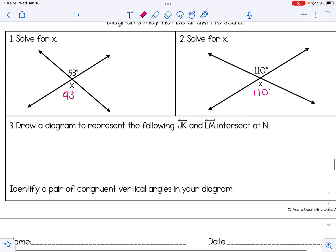Number three wants us to draw the diagram ourselves. It says draw a diagram to represent the following: Line JK and line LM intersect at N. So I'm going to start by drawing two lines. Remember that when we draw lines, they have arrows on the end. And I know that the point of intersection is N.